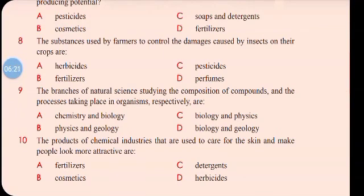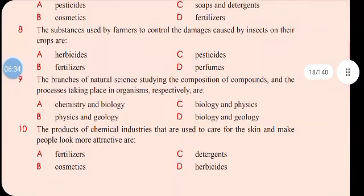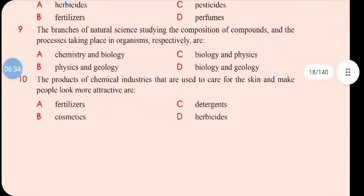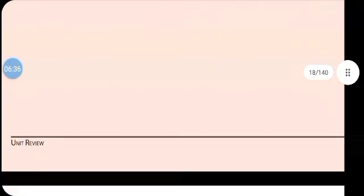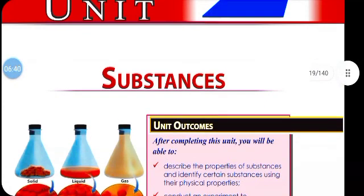Number ten: the products of chemical industry that are used to care for skin and make people look more attractive are cosmetics. That concludes unit one. Next we will see unit two about substances. Thanks for watching and see you in the next lesson.